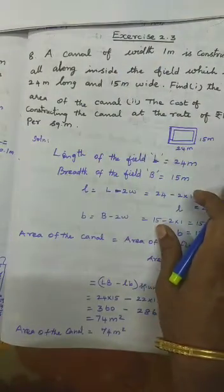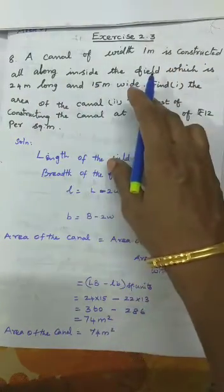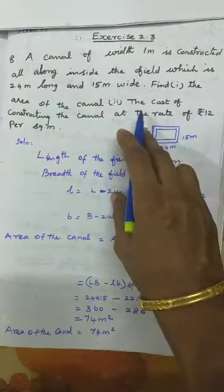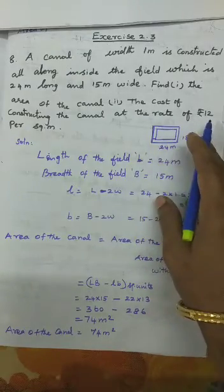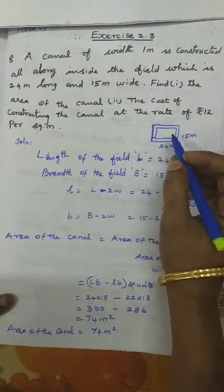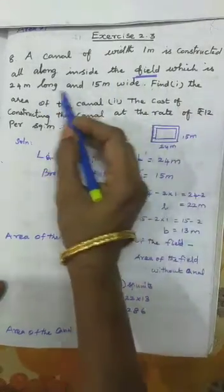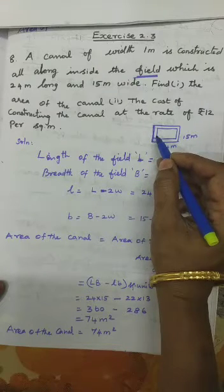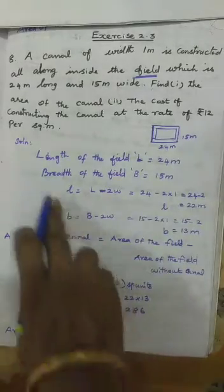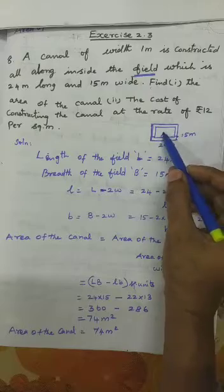Exercise 2.3, problem 8: A canal of width 1 meter is constructed all along inside a field which is 24 meters long and 15 meters wide. Find the area of the canal and the cost of cementing it at ₹12 per square meter. Length L = 24 m, breadth B = 15 m. The inner length is 24 minus 2×1 = 22 meters, and inner breadth is 15 minus 2×1 = 13 meters.